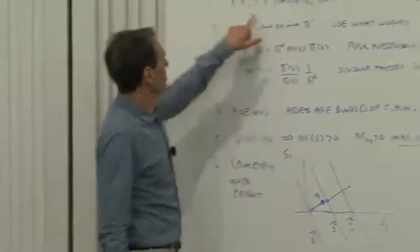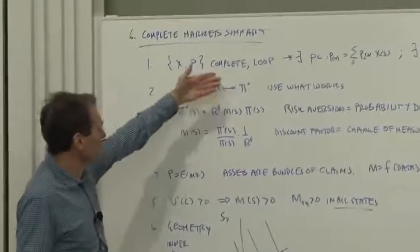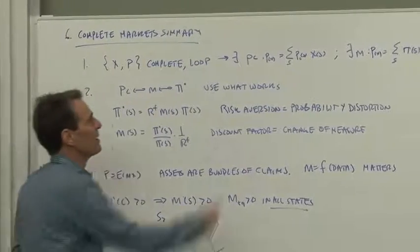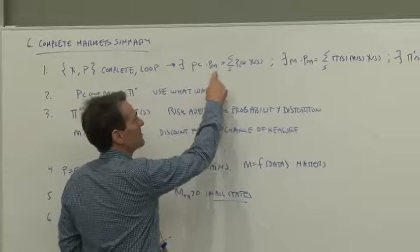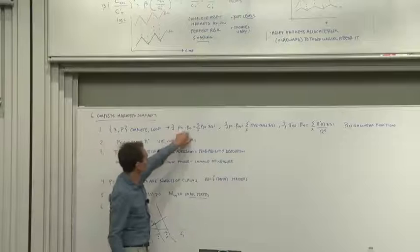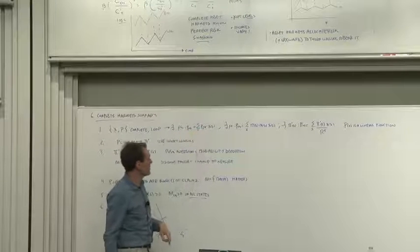First, when payoffs and prices are in a complete market and if the law of one price holds, then we found that the price of any payoff is just the sum of its contingent claims prices. So there's a contingent claims price factor that represents prices that way.